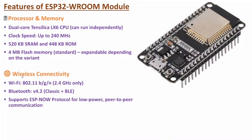The next feature is based on wireless connectivity. Here we have Wi-Fi support at 2.4 GHz. Here we have Bluetooth version 4.2, which includes classic and low power Bluetooth. It also supports ESP-NOW protocol, which is used for low power and peer-to-peer communication. So we have Wi-Fi and Bluetooth connectivity for different applications.